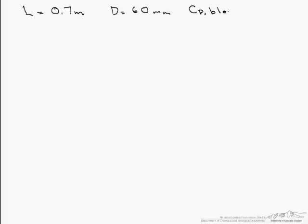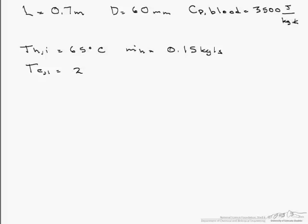The heat capacity of the blood is 3500 joules per kilogram K. The hot water comes in at 65 degrees C with a mass flow rate of 0.15 kilograms per second, and the blood comes in at 20 degrees C at a mass flow rate of 0.06 kilograms per second. What we want to know is the temperature of the blood leaving the exchanger after it's been heated, so our T_C at the outlet.